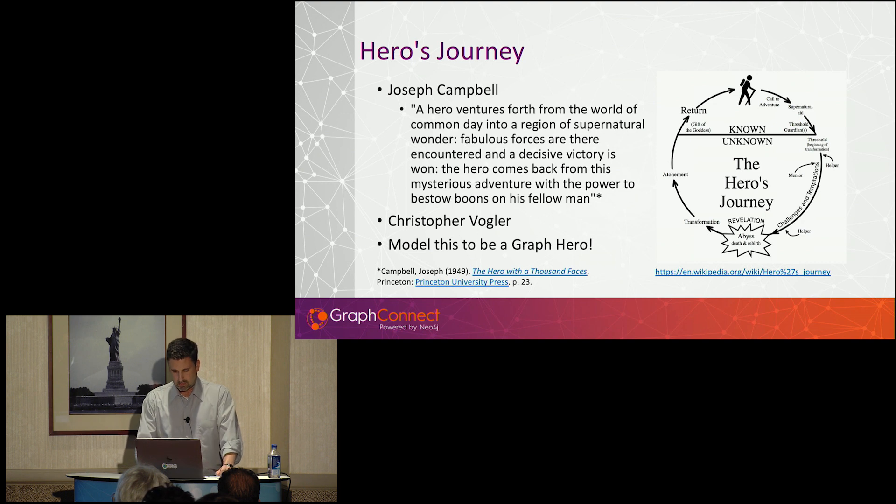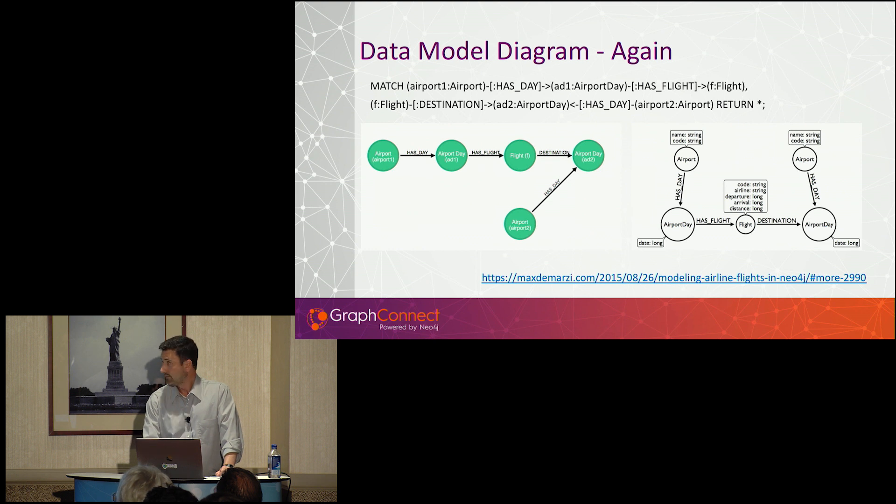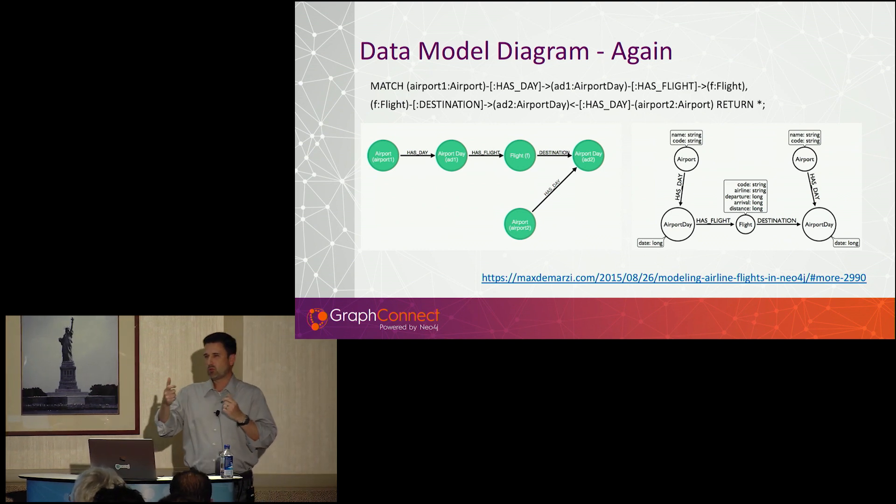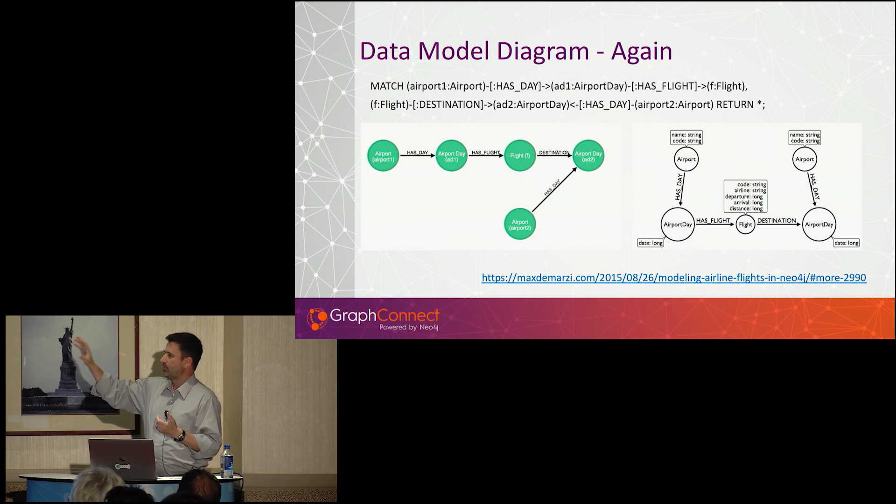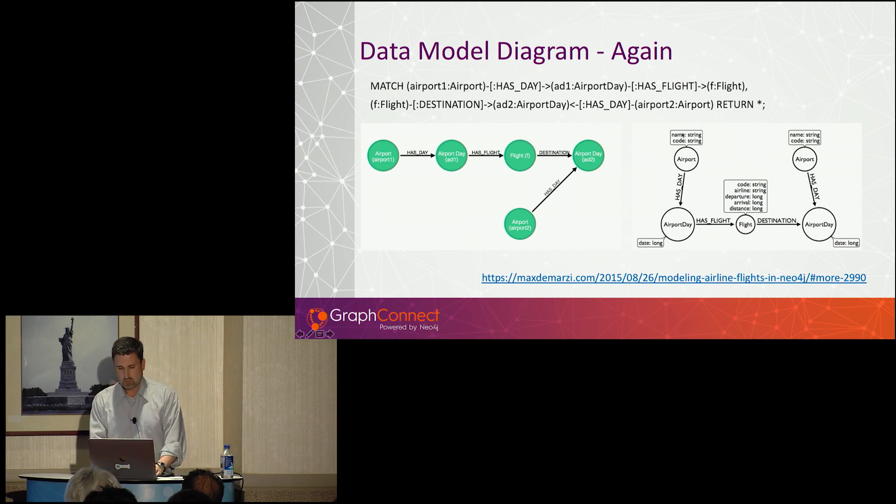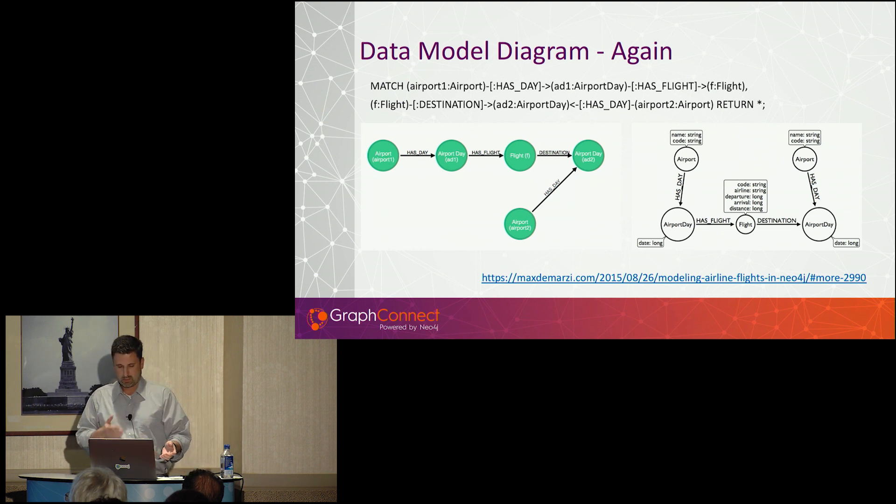So one more thing about data modeling. The data models I showed you were basically I was showing you ones where there's like a single view of a node label. In this case, Max, this is again a Max reference - this is done a few years ago using arrows. But he has this example of showing the structure of I want to see like airports and a flight between two airports. So I have airport listed twice. And I have airport day listed twice. So this is kind of I'm showing like the model but also with some structure. And so what I did is I just wrote a cipher statement that essentially mirrors that model.